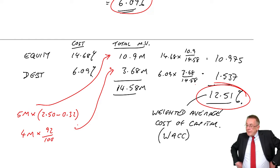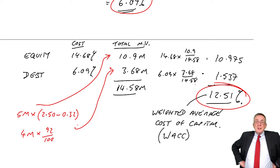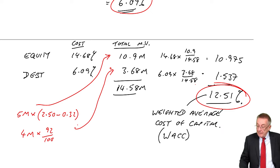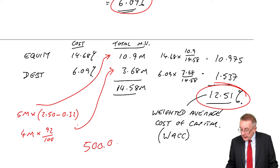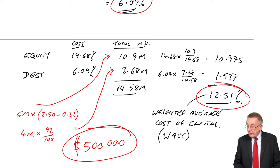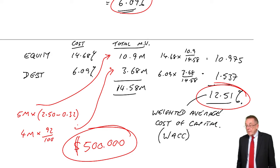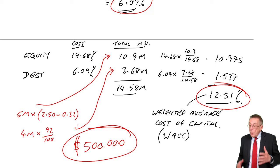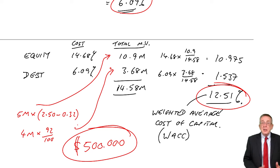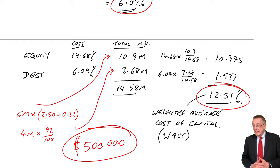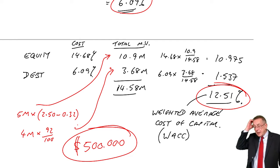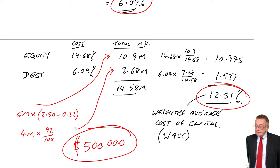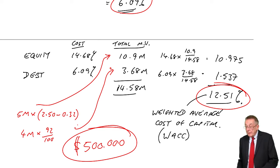Suppose this company was considering a new project which needed 500,000. We need to raise 500,000. Here's how we're currently financed: equity 10.9 million, debt 3.68 million. We're going to raise another half million for a new project. I could raise the money all from equity, all from debt, or part from equity and part from debt.